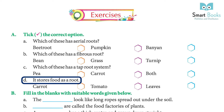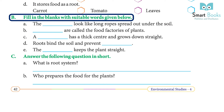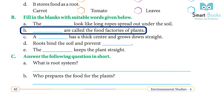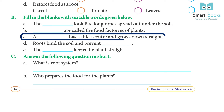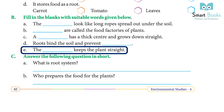D: It stores food as a root — carrot, tomato, or leaves? Answer: carrot. Fill in the blanks: A: The roots look like long ropes spread out under the soil — answer: roots. B: Leaves are called the food factories for plants — answer: leaves. C: A taproot has a thick center and grows down straight — answer: taproot. D: Roots bind the soil and prevent — answer: soil erosion.